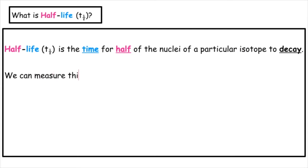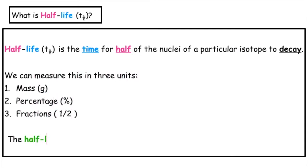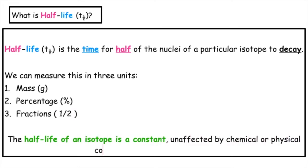We can measure this in three units: mass, which is measured in grams; percentage; and fractions. The half-life of an isotope is a constant — it is unaffected by any chemical or physical conditions. It does not change.